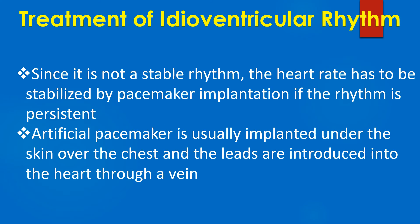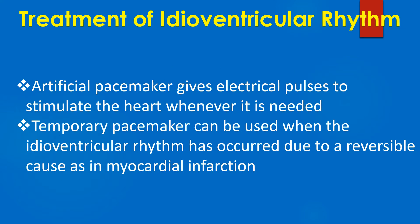Since it is not a stable rhythm, the heart rate has to be stabilised by pacemaker implantation if the rhythm is persistent. An artificial pacemaker is usually implanted under the skin over the chest, and the leads are introduced into the heart through a vein. The artificial pacemaker gives electrical pulses to stimulate the heart whenever needed. A temporary pacemaker can be used when idioventricular rhythm has occurred due to a reversible cause, as in myocardial infarction.